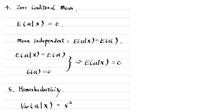The zero conditional mean assumption is the most important assumption. If it fails, the OLS estimators are biased. If only the homoscedasticity assumption fails, the OLS estimators are still unbiased. They are just not the most efficient estimators because they do not have the smallest variance.